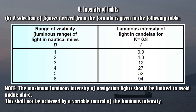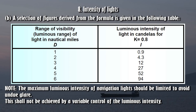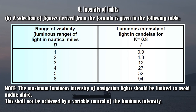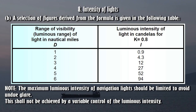(B) A selection of figures derived from the formula is given in the following table. Range of visibility (luminous range in nautical miles) and corresponding luminous intensity in candelas for K = 0.8: D=1, I=0.9; D=2, I=4.3; D=3, I=12; D=4, I=27; D=5, I=52; D=6, I=94. Note: the maximum luminous intensity of navigation lights should be limited to avoid undue glare. This shall not be achieved by a variable control of the luminous intensity.